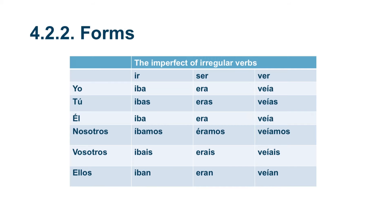The imperfect also has irregular verbs, not as many as the preterite or other tenses — that's the good news. Look with me at the following verbs that are the most common ones that have stem changes or are irregular: ir, ser, and ver.